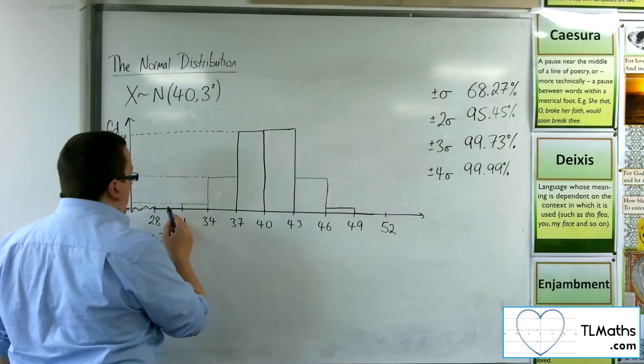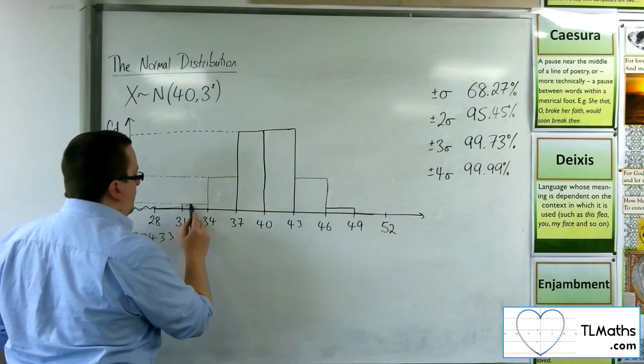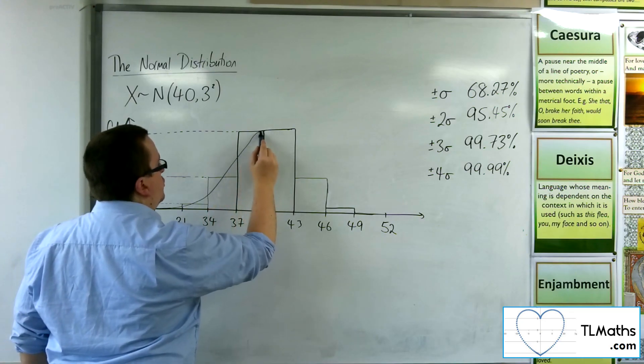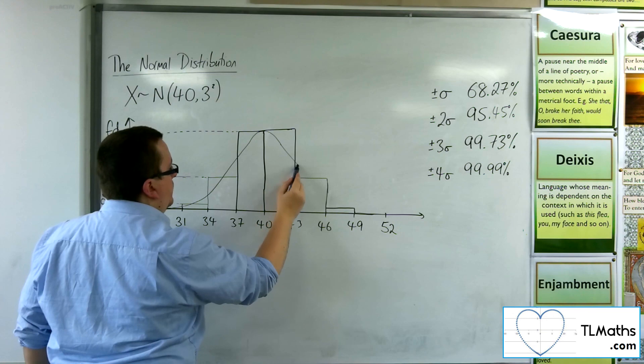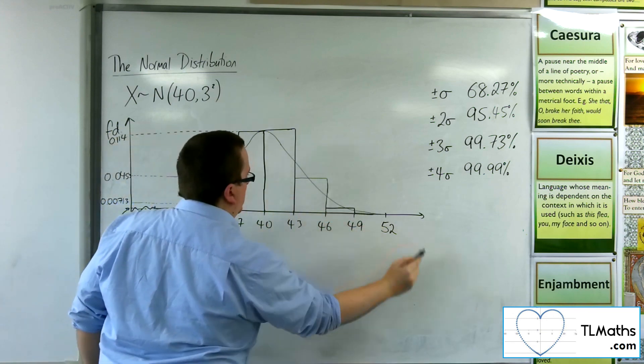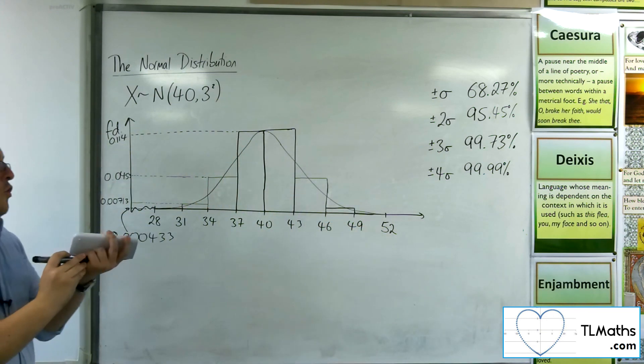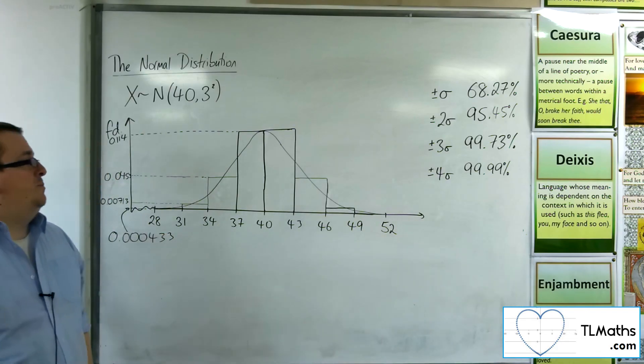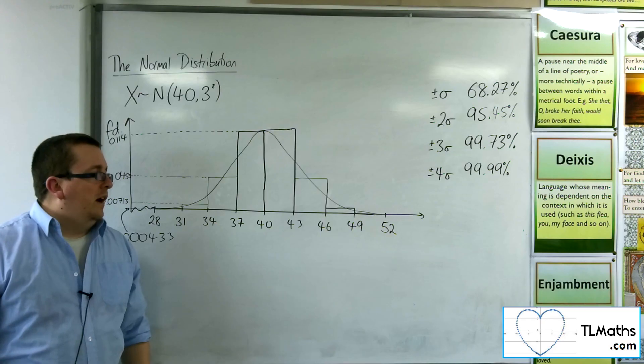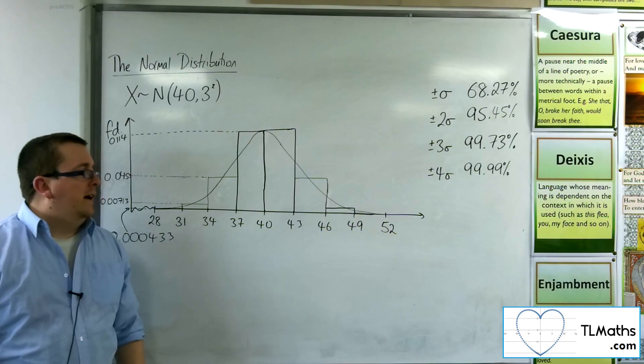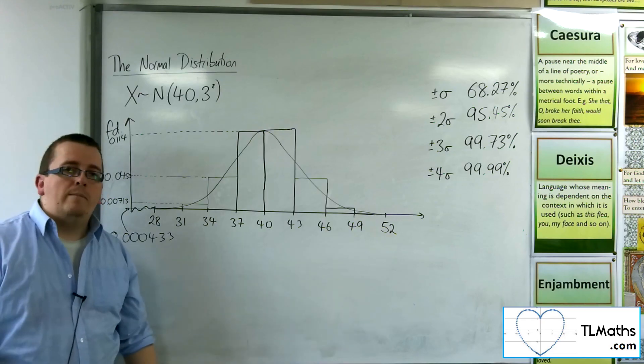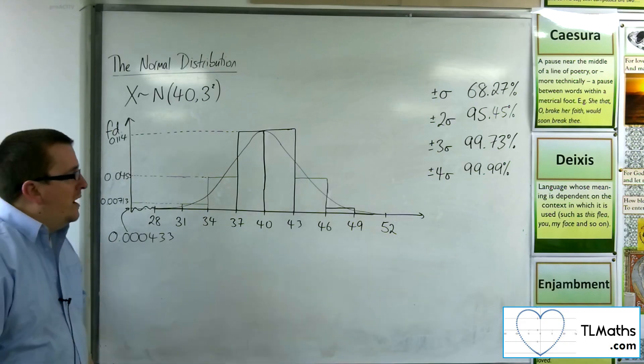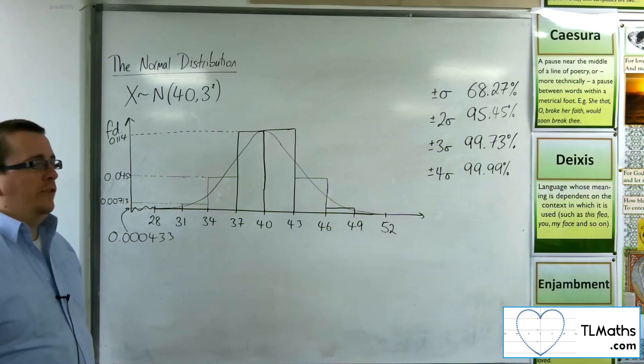And what you can see here is that we have this normal shape. I haven't really drawn it too well, but you can see this normal shape from this. And we can approximate that normal distribution using a rectangular base, using a histogram there. So, this is linking it in with histograms and the idea of frequency density.